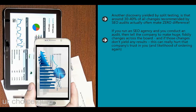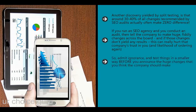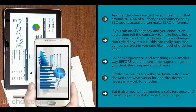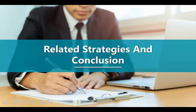If you run an SEO agency and conduct an audit, then tell the company to make huge fiddly changes across the board - and those changes don't yield any results - this can really hurt that company's trust in you. So admit ignorance and test things in a smaller way before announcing the big changes you think the company should make. Finally, the results also showed that what works for one site doesn't necessarily work for another - impacted by everything from industry to competition to writing style. This means running a split test once and forgetting about it may not be enough; you need to test your strategy every time before rolling it out across the board.